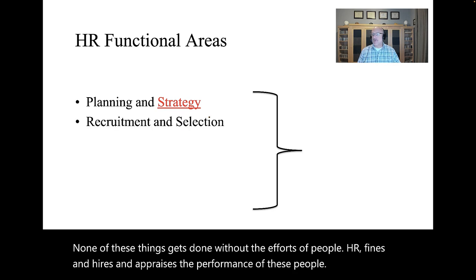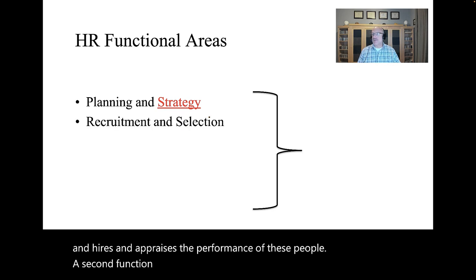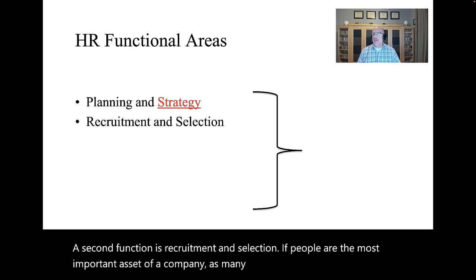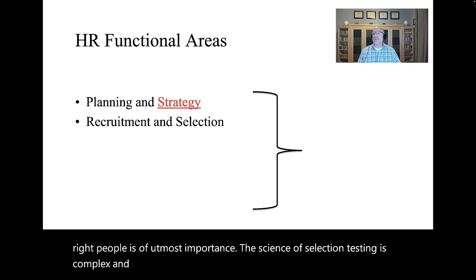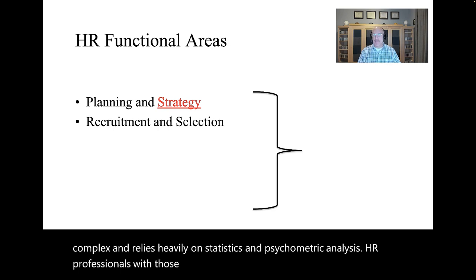A second function is recruitment and selection. If people are the most important asset of a company, as many firms like to say, then finding the right people is of utmost importance. The science of selection testing is complex and relies heavily on statistics and psychometric analysis. HR professionals with those skills are in high demand, so companies can avoid the high cost of employee turnover.